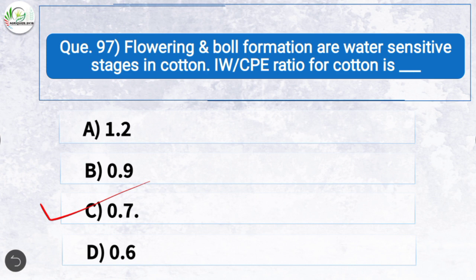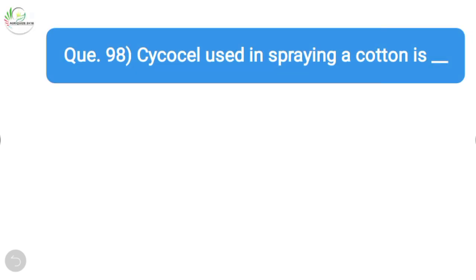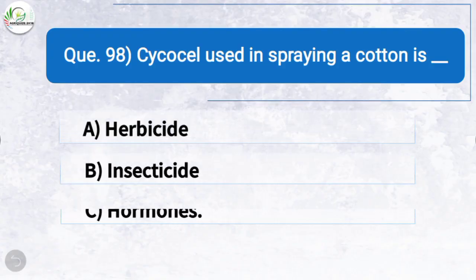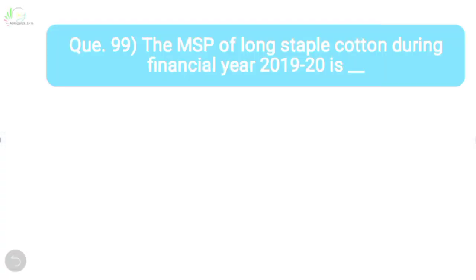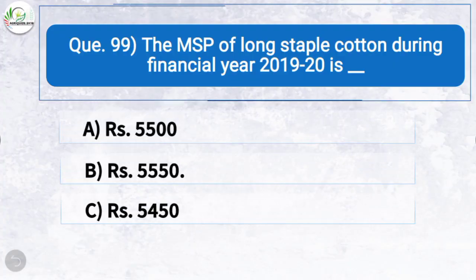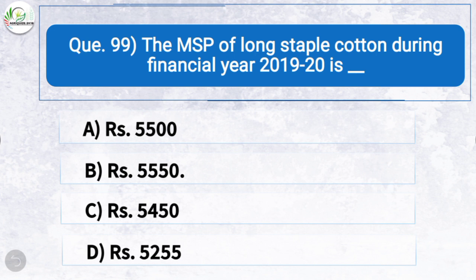Question ninety-seven: Flowering and ball formation are water sensitive stages in cotton. The irrigation water to cumulative pan evaporation (IW/CPE) ratio for cotton is — the correct answer is option C: 0.7. Question ninety-eight: Psycho cell used in spraying of cotton is — the correct answer is option C: hormones. Question ninety-nine: The MSP of long staple cotton during financial year 2019–20 is — the correct answer is option B: Rs. 5550.